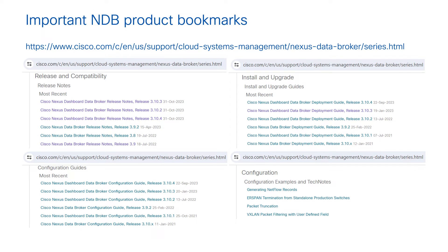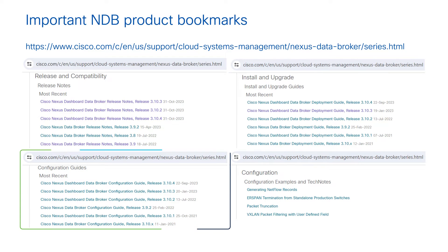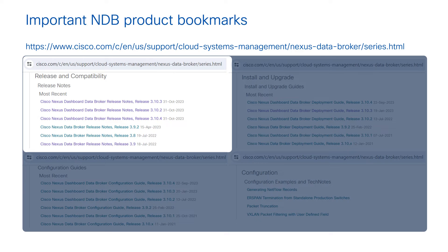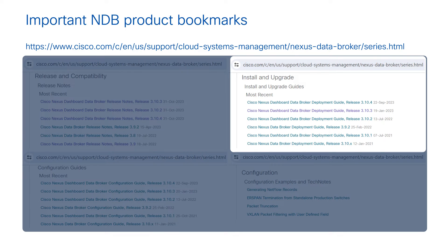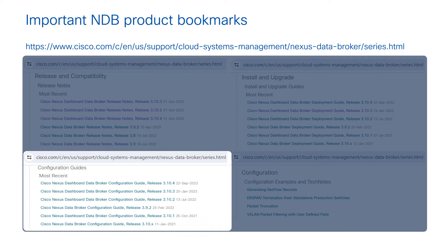Here are some important bookmarks. The NDB landing page has four categories: release notes, install and upgrade guides, configuration guide, and tech notes or feature implementation guides. The release notes and compatibility guide show what features were released, what was deprecated, open bugs, and the compatible Nexus 9K switches qualified for that release. The install and upgrade guides provide detailed steps for installing or upgrading the controller in all deployment modes — centralized and embedded — including startup scripts.